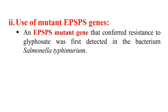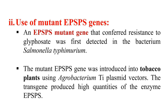The second strategy is the use of a mutant target protein. We use a gene that will produce the target enzyme EPSPS in a mutated form but functioning normally. The gene for the mutated EPSPS was detected in the bacterium Salmonella typhimurium. This gene was isolated and transferred into plants to make them glyphosate resistant. The mutant EPSPS gene was introduced into tobacco plants using an Agrobacterium Ti plasmid vector. These transgenic plants produce a high quantity of EPSPS enzyme in the mutated form. Glyphosate is not able to inhibit this mutated EPSPS enzyme, but the enzyme still works normally, making the plant resistant against glyphosate.